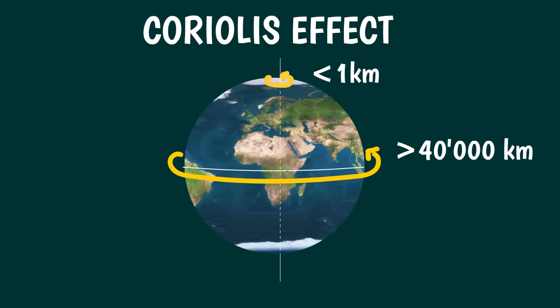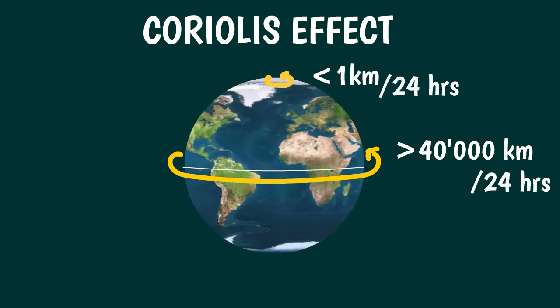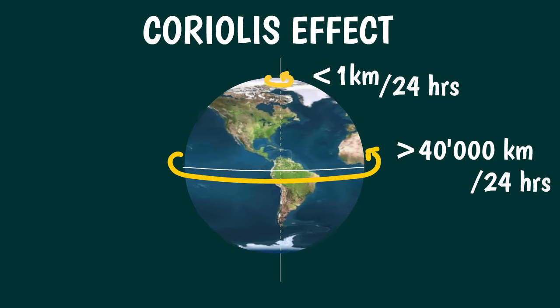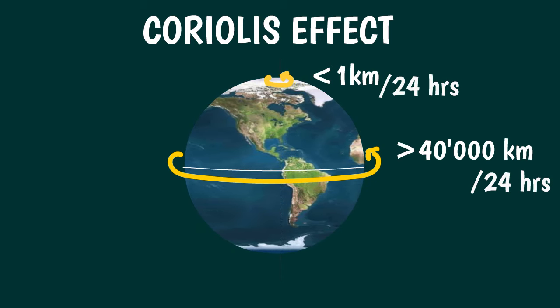So since all the points on the surface complete the loop in 24 hours, those near the equator must necessarily rotate at a much greater speed than those near the poles.